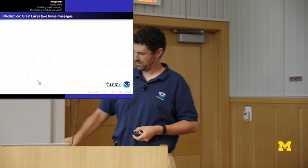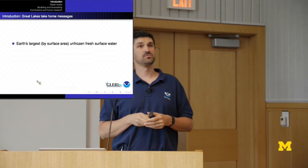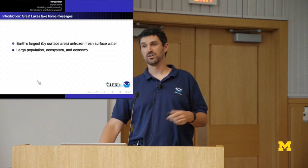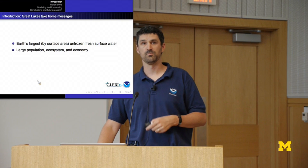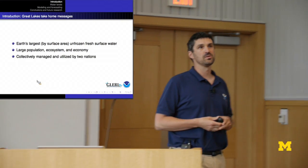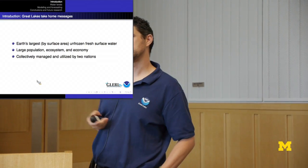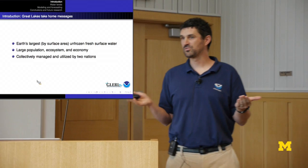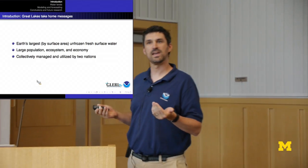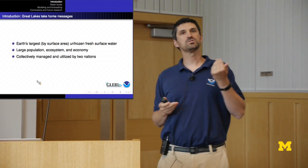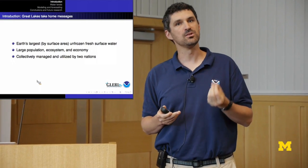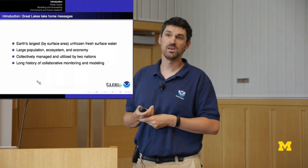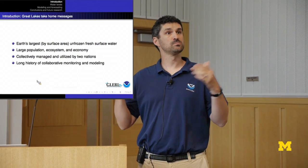So a few take-home messages from this introduction: the Great Lakes are the largest freshwater surface by surface area on the planet, second largest by volume. They have a massive population — close to 40 million people in the basin — a diverse ecosystem, and a large economy. Interestingly, they're collectively managed by two different nations, but more specifically, utilized by eight different states, several tribal nations, and two different Canadian provinces. This has important implications for how water is used and managed, how data is collected, and how decisions are made. And there's a long history of collaborative monitoring and modeling going back over a century.